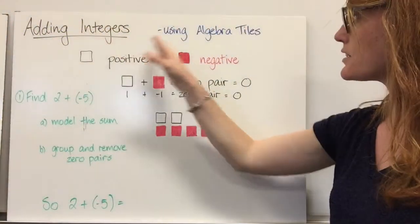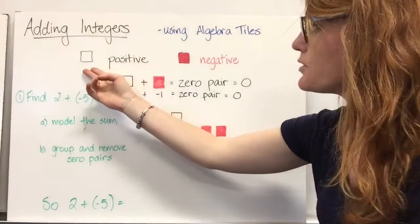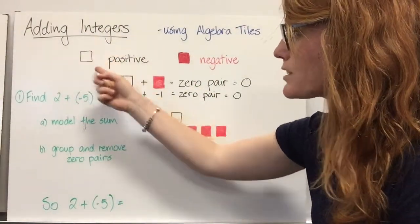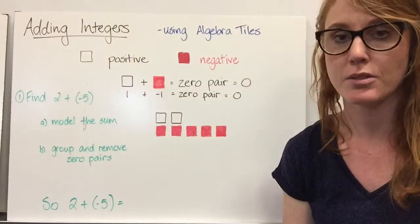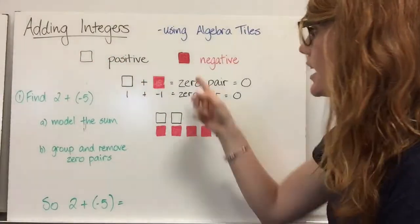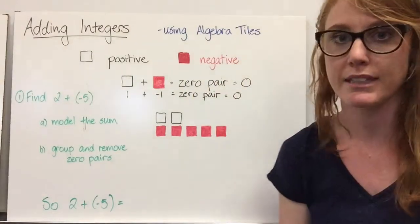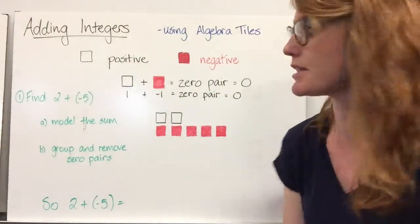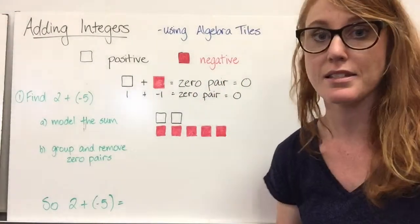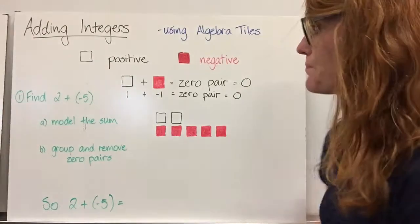Adding integers using algebra tiles. We're going to use a white square with a black outline to represent positive integers, and a red square to represent negative integers. You will see similar colors used when we use algebra tiles in the classroom.